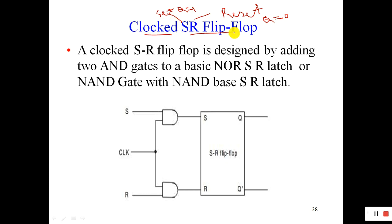A clocked SR flip-flop is designed by adding two AND gates to a basic NOR SR latch or a NAND-based SR latch. So a clocked SR flip-flop can be designed with two AND gates combined with an SR NOR latch or NAND SR latch. There may be many combinations of clocked SR flip-flop. Here we are using AND gate 1 and gate 2, on which we are applying the clock.